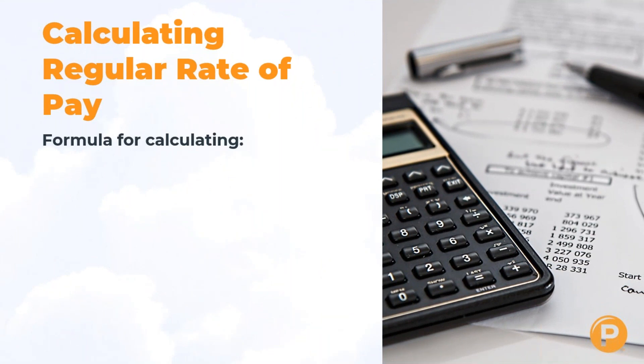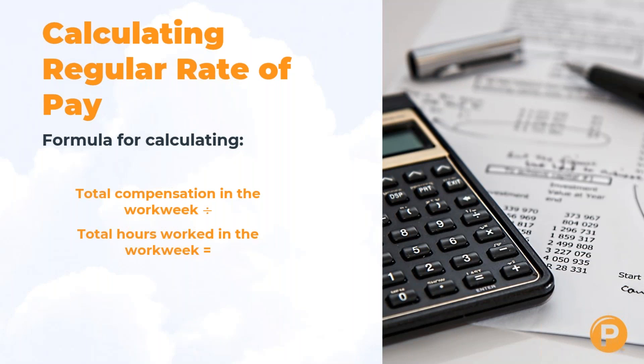Now let's talk about how you calculate this. The formula for calculating the regular rate of pay is: take the total compensation in the work week and divide it by the total hours worked in the work week. That gives you your regular rate of pay for the work week. Total comp divided by total hours equals the regular rate of pay.